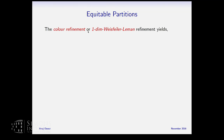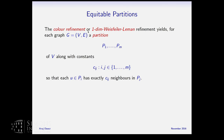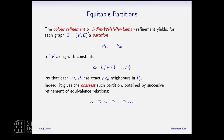Color refinement, also known as one-dimensional Weisfeiler-Lehman, gives you a partition of the vertices along with constants C_ij such that every vertex in part P_i has exactly C_ij neighbors in P_j. It gives the coarsest partition satisfying this stability condition. The algorithm arrives at it by a sequence of refinements: you start with the trivial equivalence relation or the partition into initial colors, then successively refine until it stabilizes. It stabilizes in at most n steps, and each iteration is easy to compute, making it a fast algorithm.